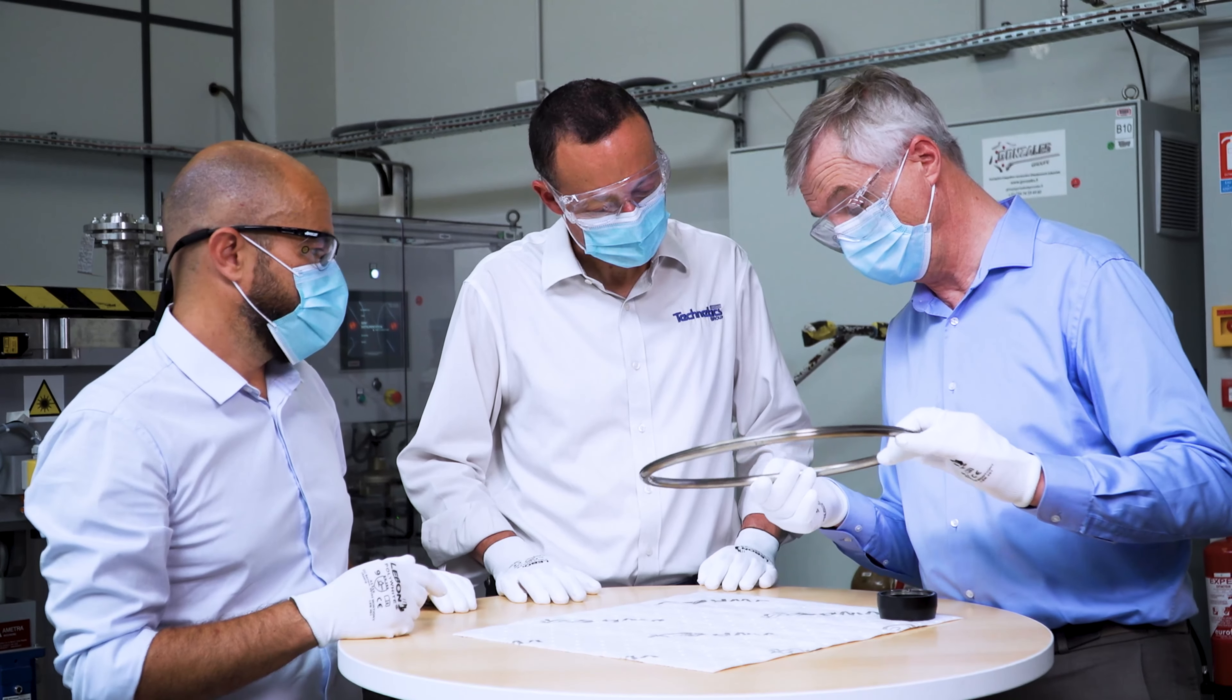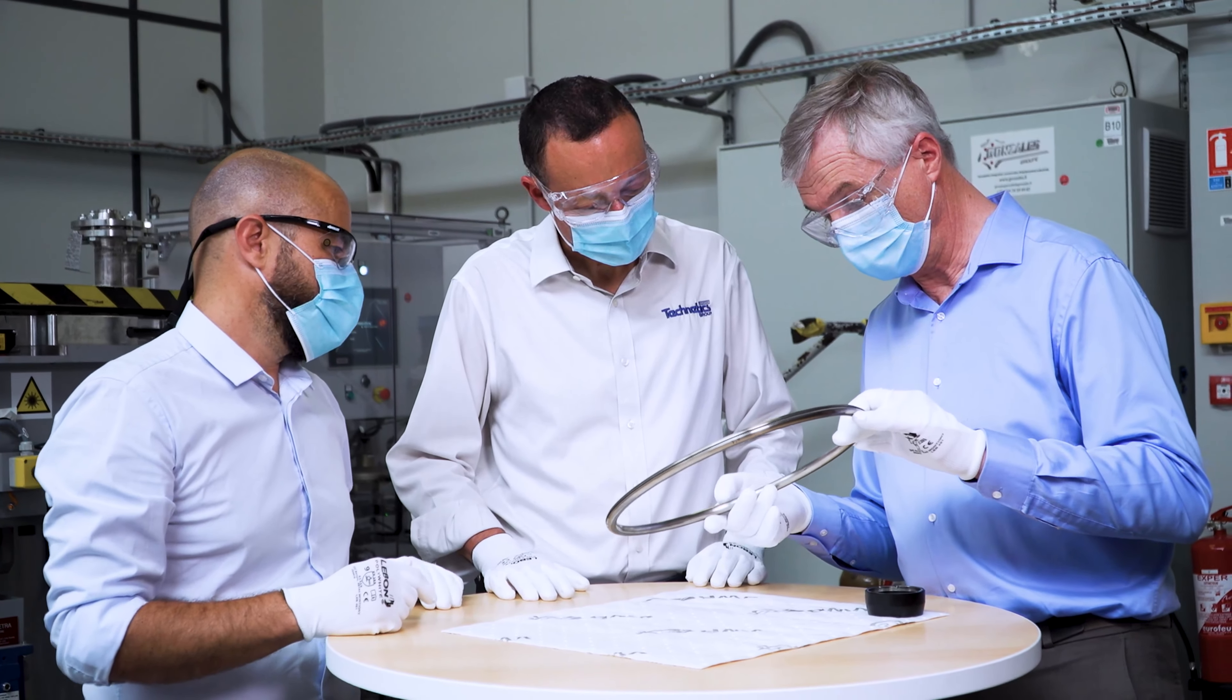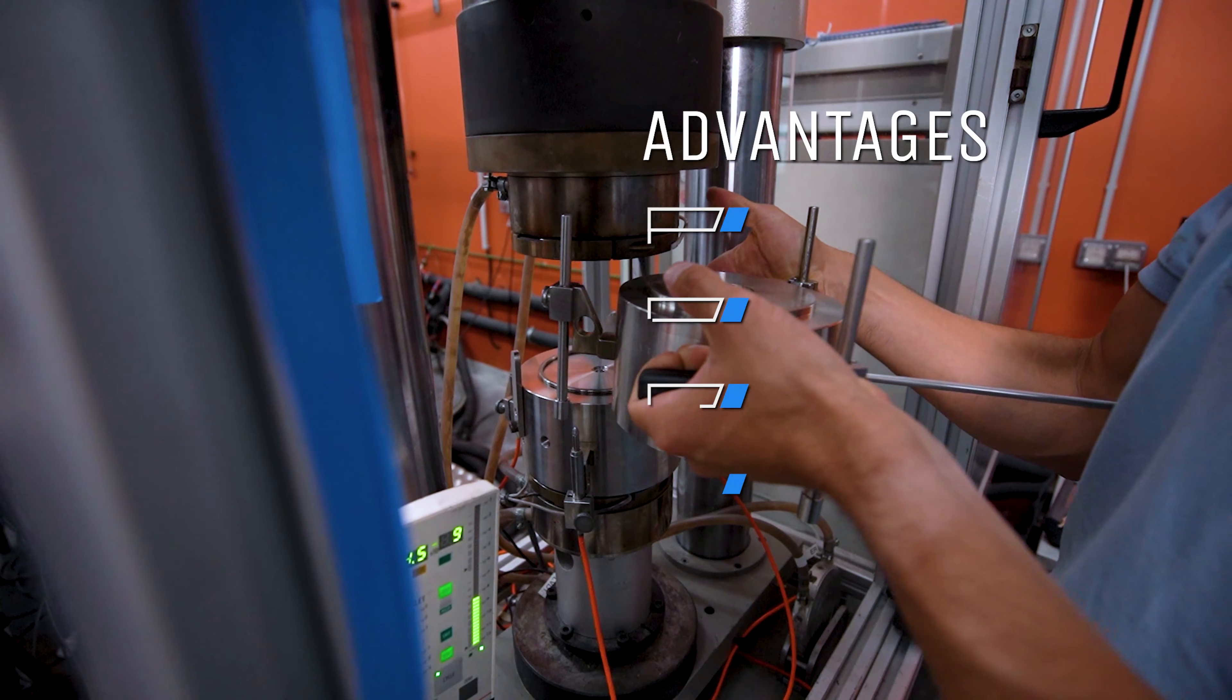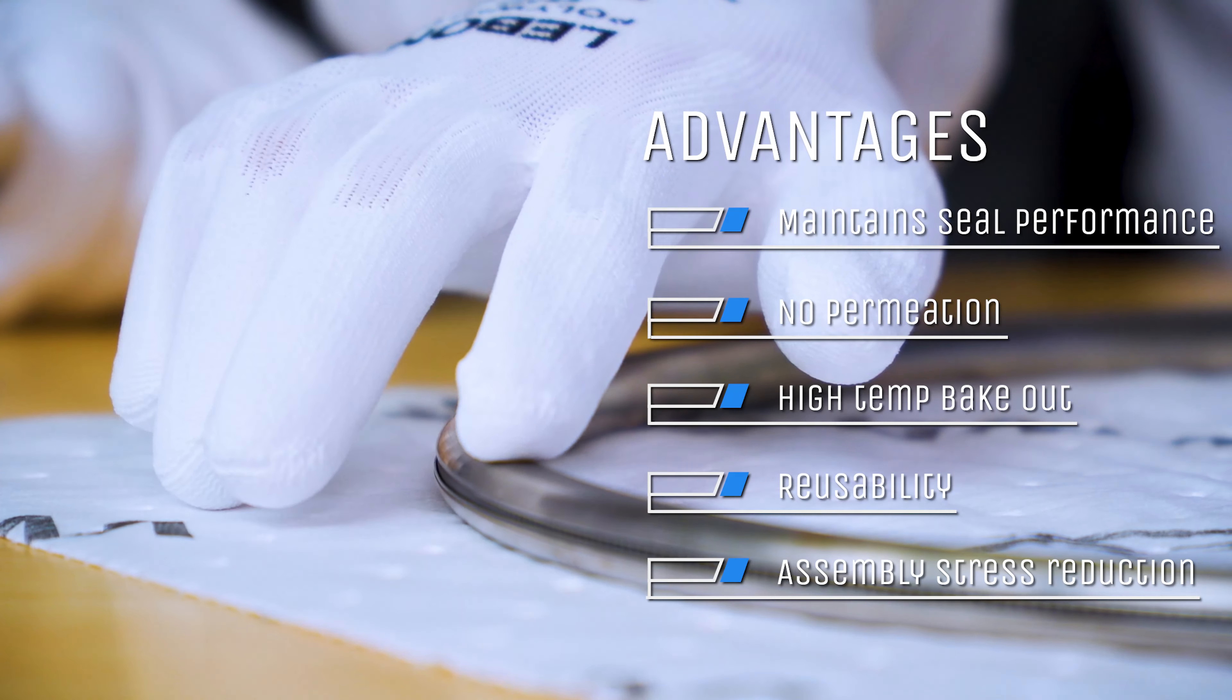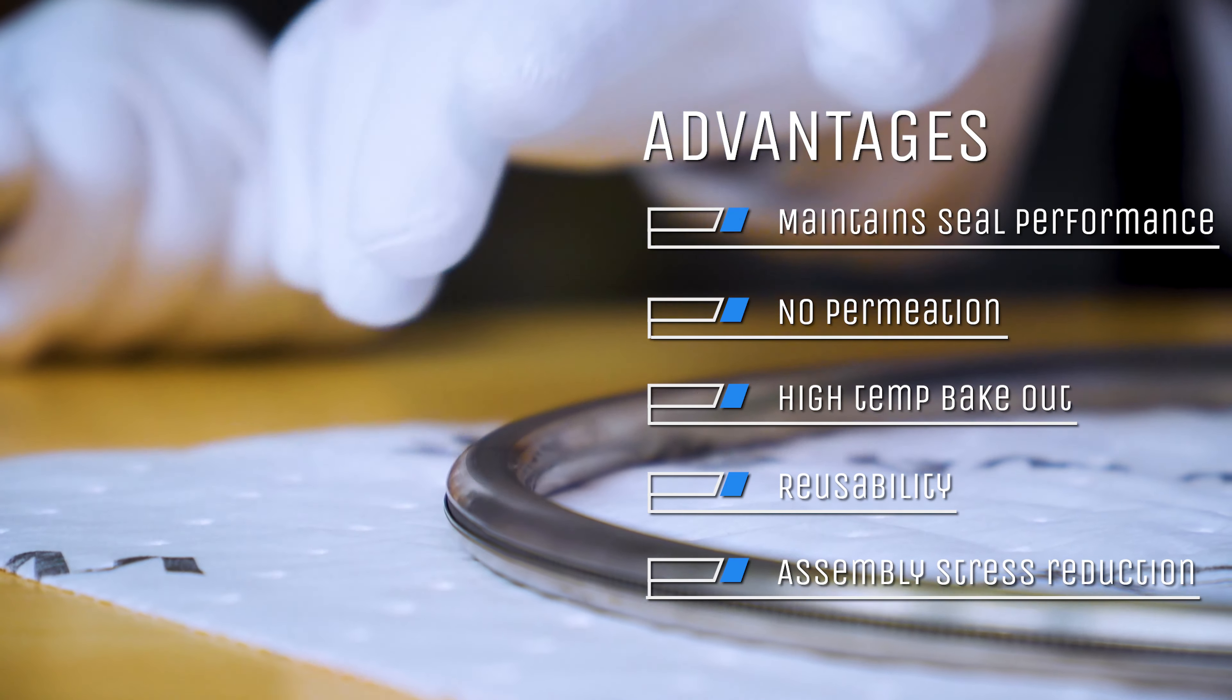The Texil seals allow us to reduce the linear load of the seals that we can use on different assemblies. The benefit for the customer is the ability to reduce their flange assemblies and the bolt load.